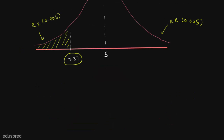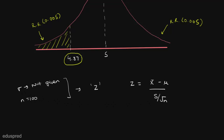Now, whether we use the z-distribution or the t-distribution? Note that we are not given any information about the population standard deviation sigma. But our sample size is large — greater than 30, it's 100 in this case — so we can safely use the z-test. The formula for z is: z equals x-bar minus mu (the hypothesized value of the population mean), divided by s divided by root n. So even without the population standard deviation, we can use z for large samples by replacing sigma with the sample standard deviation s.